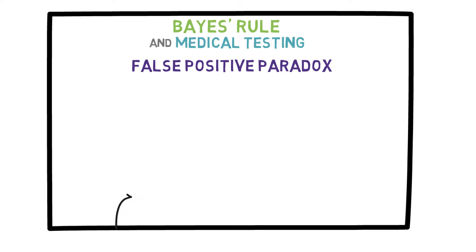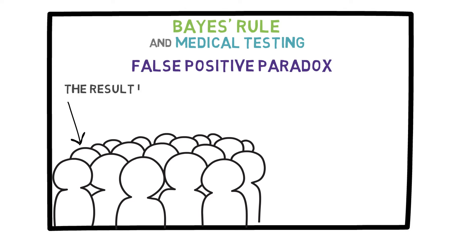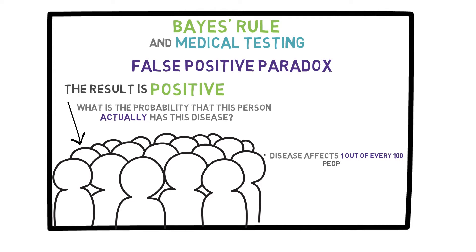You pick a random person and test them for a certain disease, and the test comes back positive. What is the probability that the person actually has that disease? First, we need to look at the facts involved. Let's say the disease affects 1 out of every 100 people, and the test to catch this disease is 90% accurate.